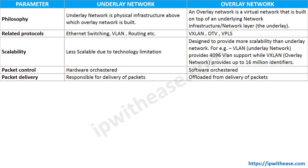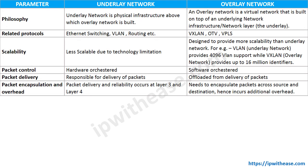Next is packet delivery. The underlay network has the primary responsibility of delivering packets, while overlay networks are offloaded from the responsibility of packet delivery. Regarding packet encapsulation and overhead: for the underlay network, reliability and delivery occur at Layer 3 and Layer 4. Overlay networks need to encapsulate packets across source and destination and then de-encapsulate them, which incurs additional overhead.